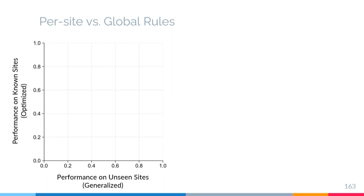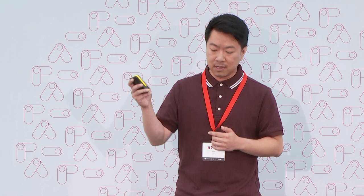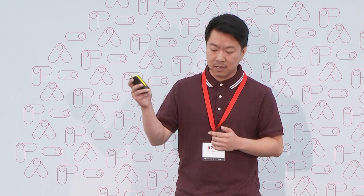The y-axis shows the performance of rules on known sites — the input to our system that we optimize rules for. The x-axis shows the performance of rules on unseen sites, when we apply rules we did not optimize for those particular sites. Performance means the percentage of sites in our dataset that fall within the acceptable region when applying the generated rules. The per-site rules that AutoFR generates on the top 5,000 sites score around 0.8, which is pretty good, but they cannot be applied on unseen sites.